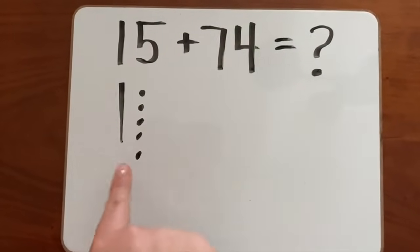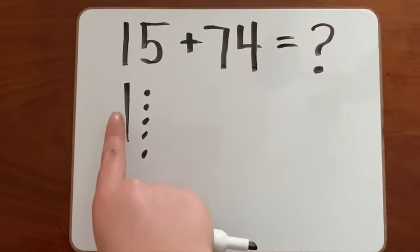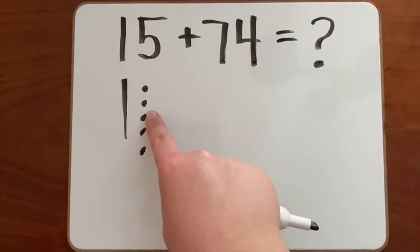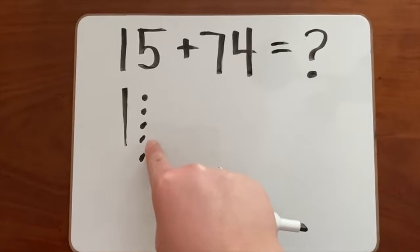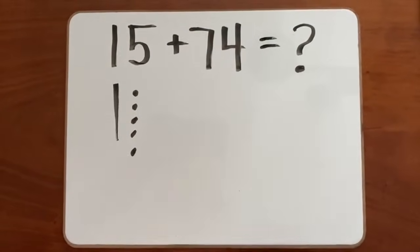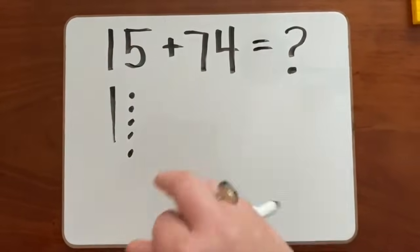Let's count our number to see if we got it right. Remember longs we count by 10. So we have 10 and then 11, 12, 13, 14, 15. Good, we represented the number 15 by drawing longs and cubes. Now, let's represent the number 74 with our drawings.